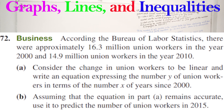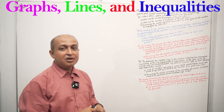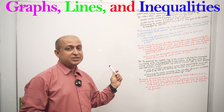There were 8 hundred and 45 million union workers in 2010. Consider the change in union workers to be linear and write an equation expressing the number Y of union workers in terms of the number X of years since 2000. X is the number of years since 2000 and Y is the number of union workers. We have to express this through a linear equation.